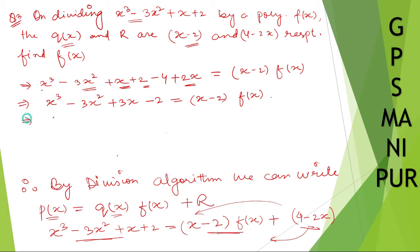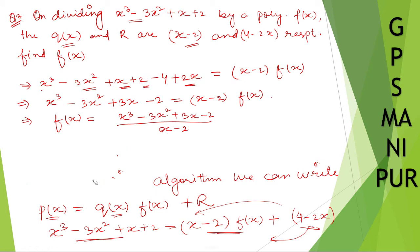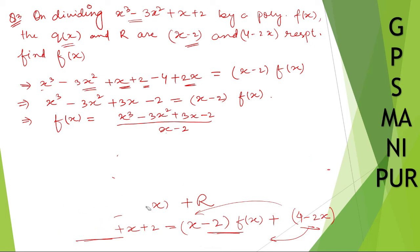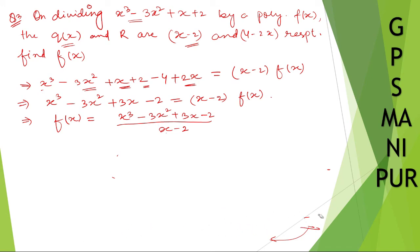So f(x) is equal to (x cubed minus 3x squared plus 3x minus 2) divided by (x minus 2), since it was multiplying on that side. Now let me directly divide: dividing x cubed minus 3x squared plus 3x minus 2 by (x minus 2).